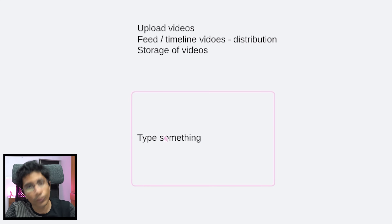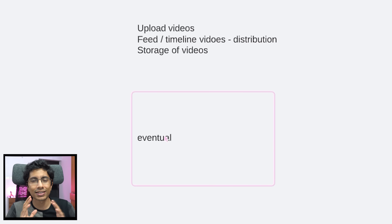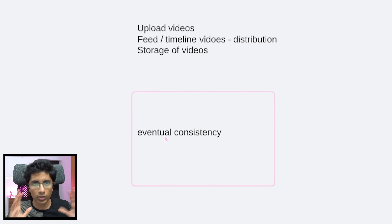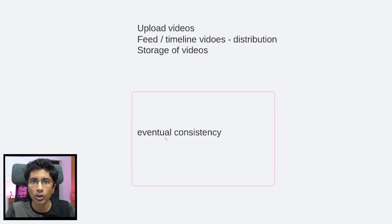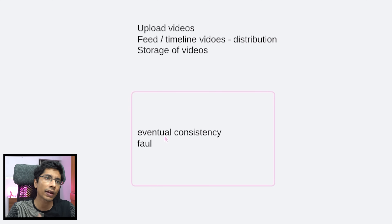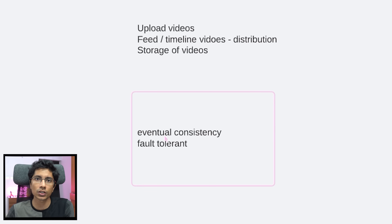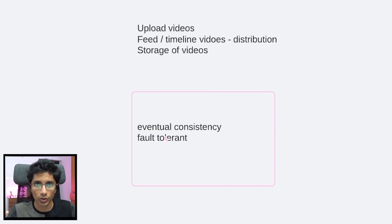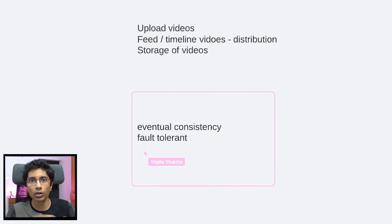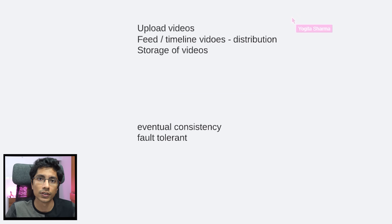Consistency is useful, but it's not something that we care about too much. If there is a delay in a video being shown in one country, it's okay. The other thing is that we do want our system to be fault tolerant. It shouldn't be like if India has an issue in one of its servers, then we don't get to see any videos. It should be like an entire data center has to go down before we start getting worried, and ideally even then it should not stop our business.